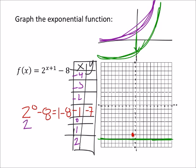So let's see, we've got 2 to the power of 1 plus 1, that's 2 squared, which is 4, 4 minus 8, would be negative 4. So we've got 0, negative 4, which is this point.